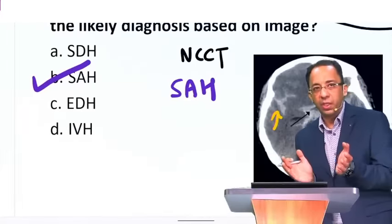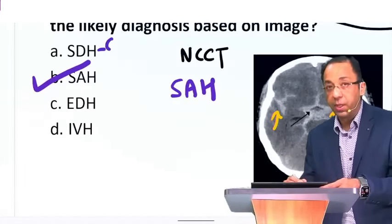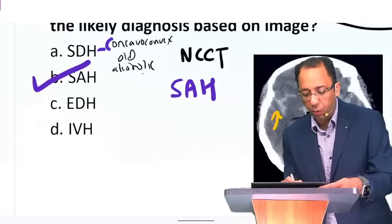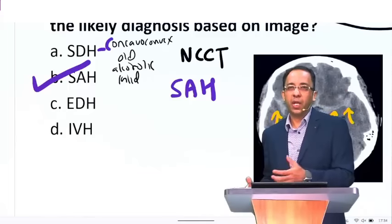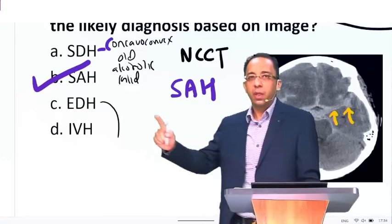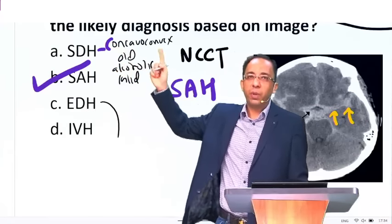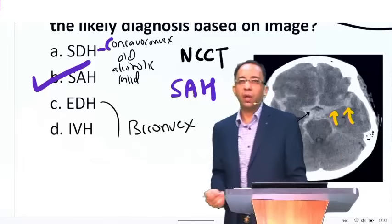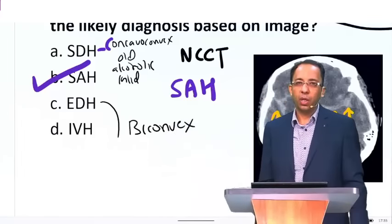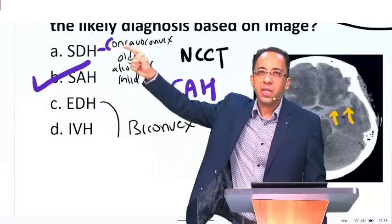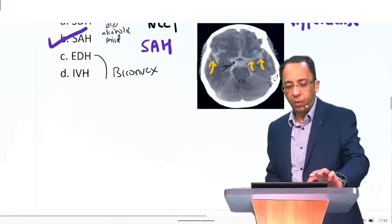Some of you may be confused between other choices. SDH — subdural hemorrhage — will be concavo-convex, and the history will be an old patient, an alcoholic patient, child abuse, or minor injury such as a fall in a bathroom. EDH is due to rupture of the middle meningeal artery; SDH is due to rupture of bridging veins. EDH will be biconvex. Lucid interval is seen in extradural hemorrhage. Also remember, EDH cannot cross the sutures, and SDH cannot cross the dural folds or cross the midline.